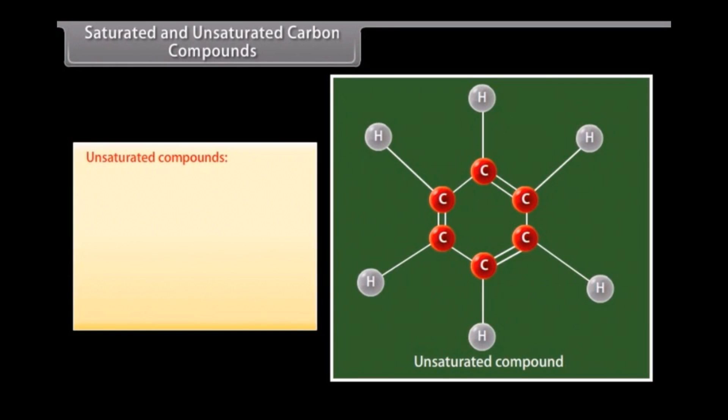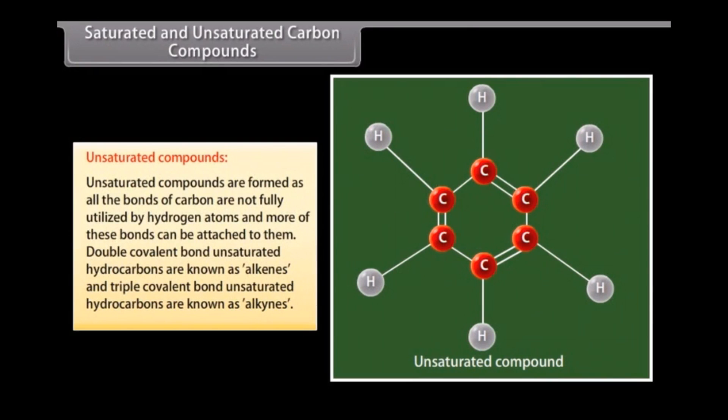Unsaturated compounds. Compounds of carbon and hydrogen that contain double or triple covalent bonds between carbon atoms are called unsaturated hydrocarbons. These are formed as all the bonds of carbon are not fully utilized by hydrogen atoms and more of these bonds can be attached to them. Double covalent bond unsaturated hydrocarbons are known as alkenes and triple covalent bond unsaturated hydrocarbons are known as alkynes.